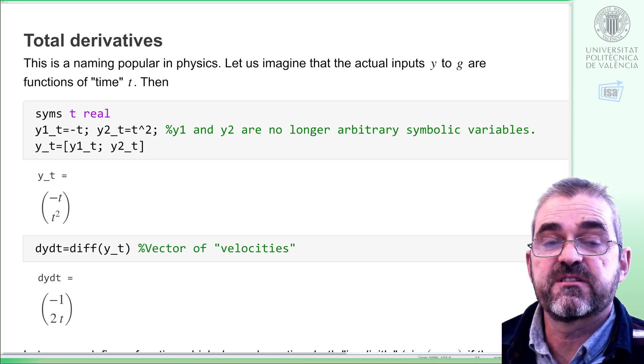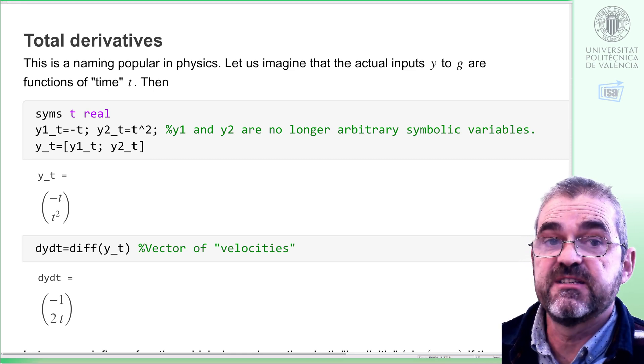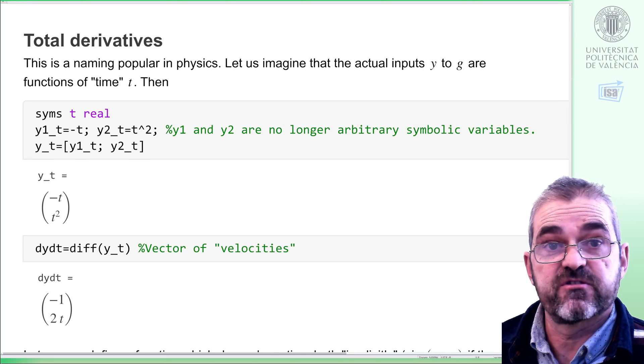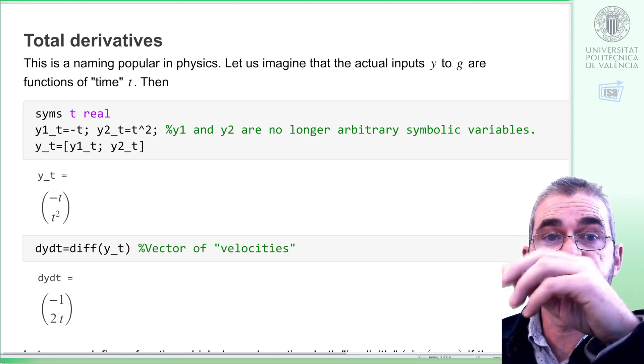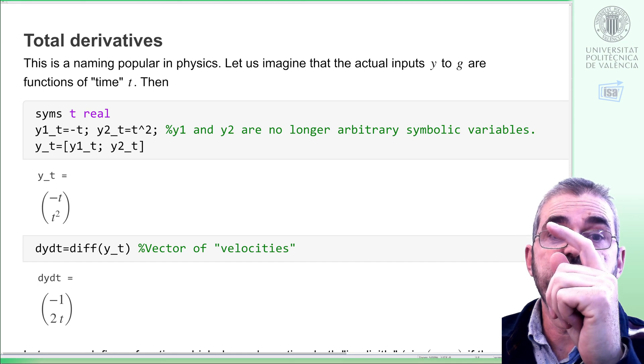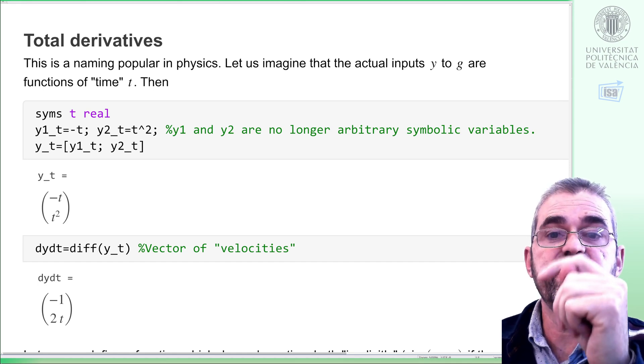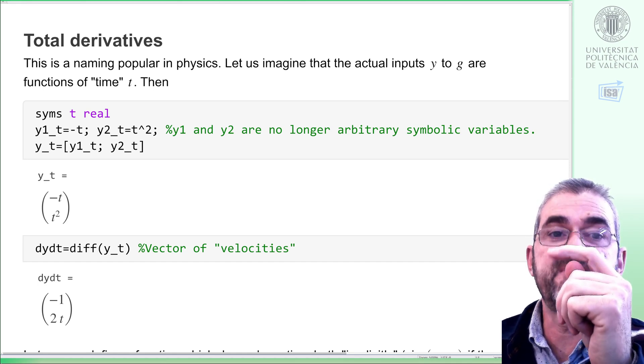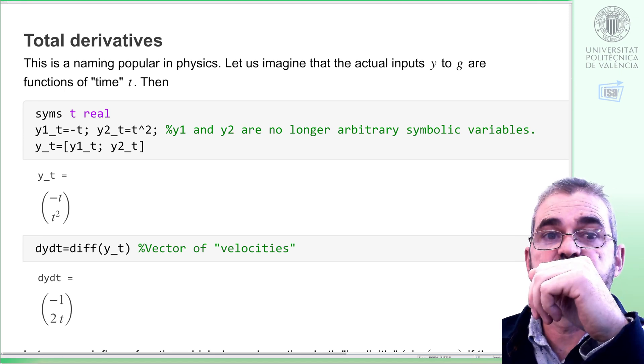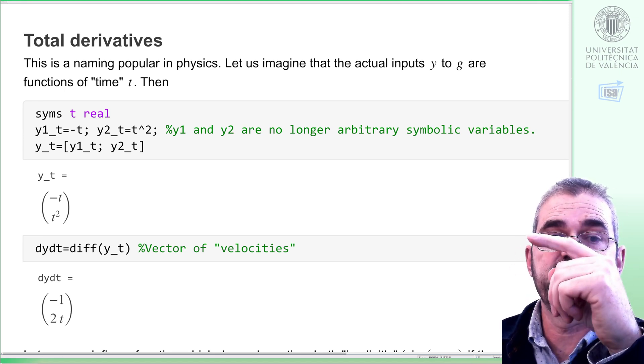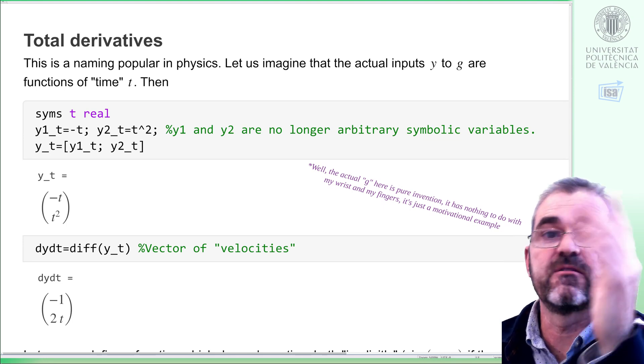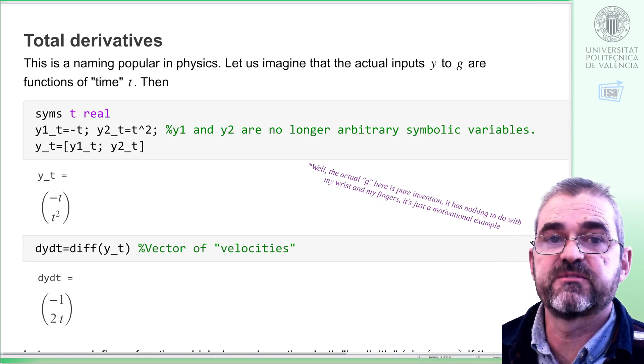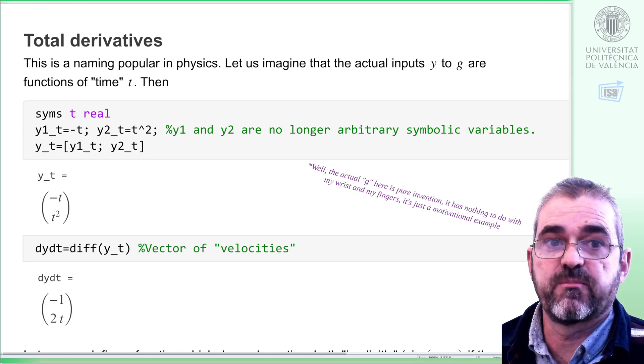So everything will be a function of time. Let us imagine that, for instance, the two inputs of function g are actually functions of time. I can have, like, two angles in my wrist, and then g will give me the horizontal and vertical coordinates of the tip of my finger. Then we wish to obtain the speeds of the tip of my finger from the speeds of my rotations, say, of my angles. This is the kind of problems these discussions usually apply to.